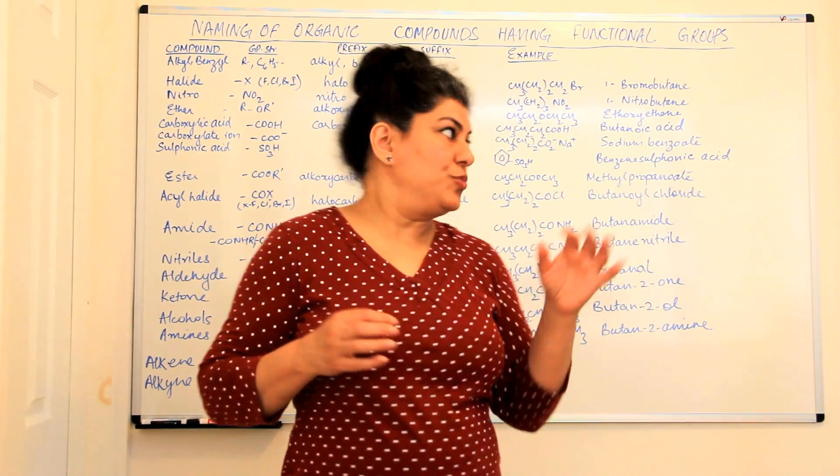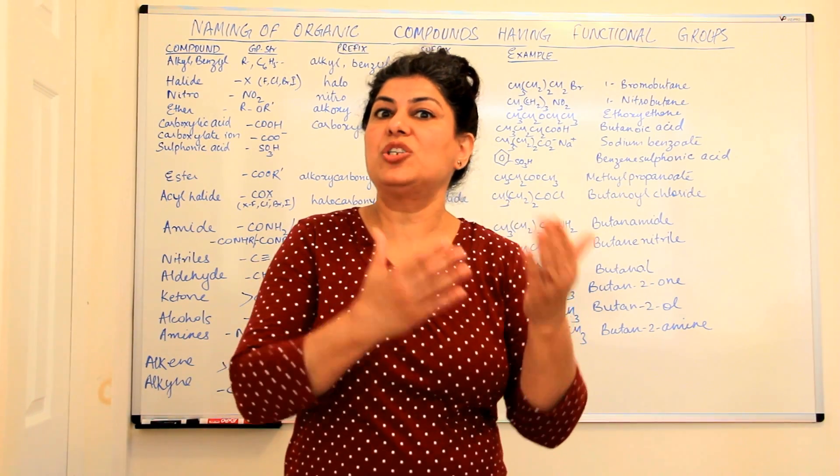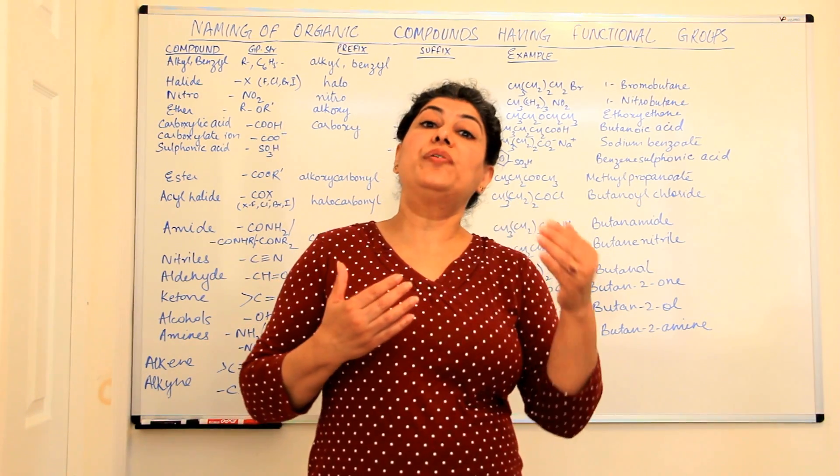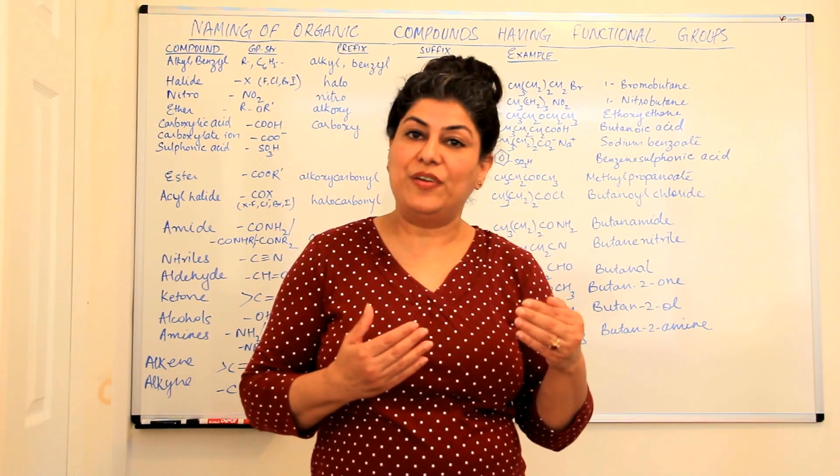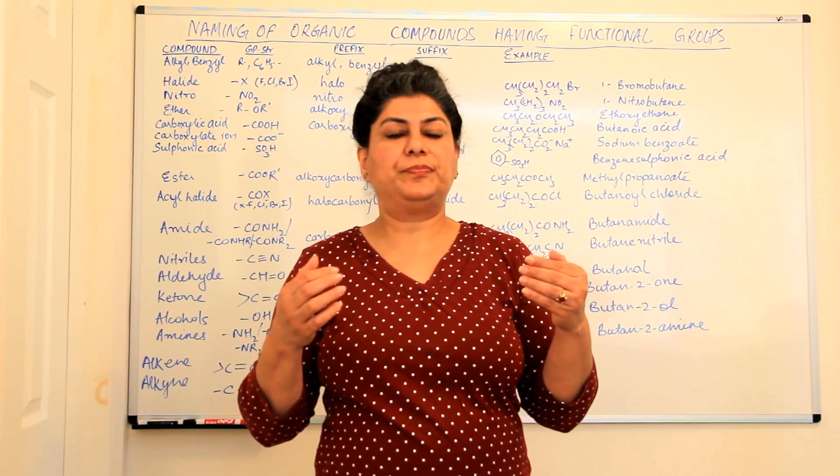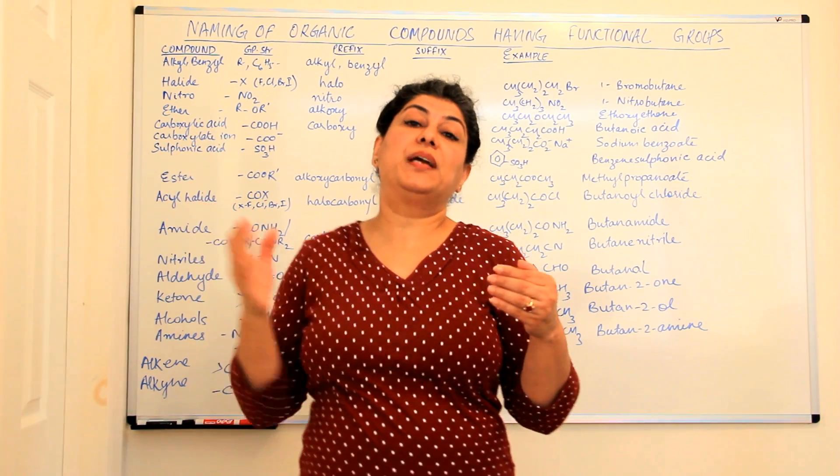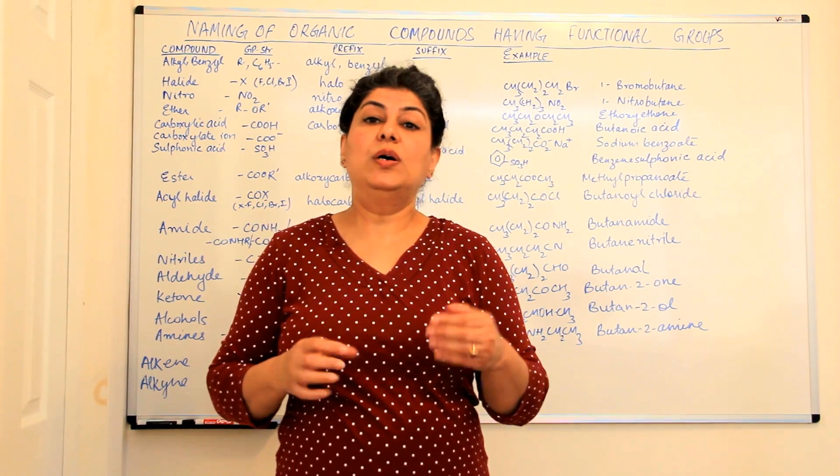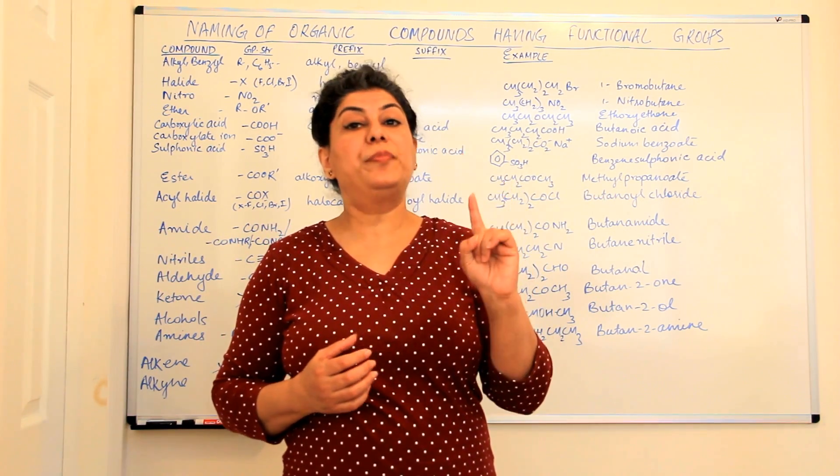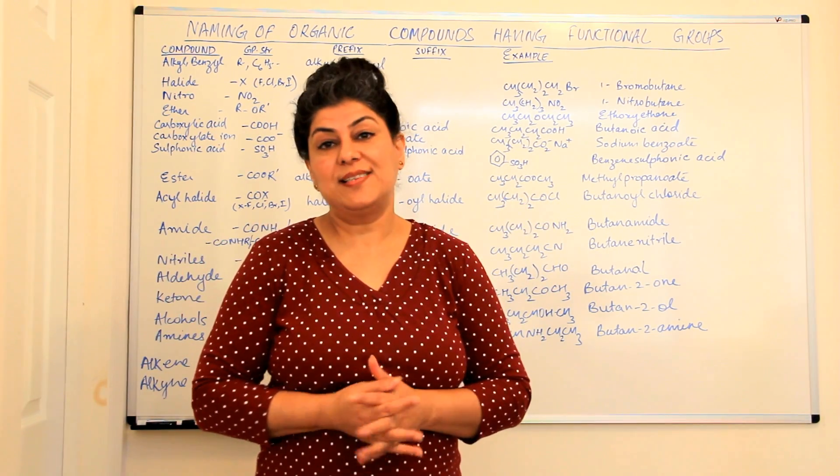So the one which is more reactive would be obviously stronger, it will be more responsible for the reactivity of that compound and hence that functional group which is more reactive would be the primary functional group while another one which is maybe less reactive will become a secondary prefix or it becomes a substituent. So an organic compound which has more than one functional group can have only one primary functional group and the rest are all treated as substituents.